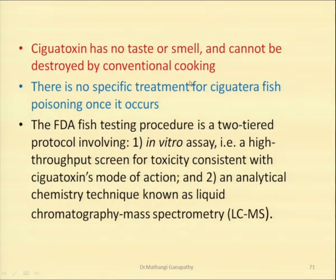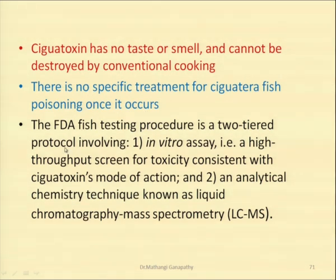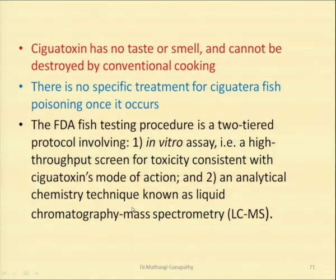Ciguatoxin has no taste and smell and cannot be destroyed by conventional cooking. There is no specific treatment for ciguatera fish poisoning once it occurs — no taste, no smell, so you cannot detect whether the fish has been contaminated, and conventional cooking does not destroy it. The FDA fish testing procedure is a two-tiered protocol: one is an in vitro assay, a high-throughput screening for toxicity consistent with ciguatoxin's mode of action; the second is liquid chromatography mass spectrometry, LC-MS.